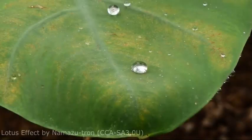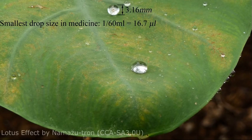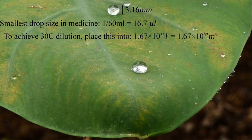What does this mean in practical terms? If we start with the smallest drop size used in medicine today — 60 drops per milliliter — then one drop is 16.7 microlitres. That's a drop of water 3.16 millimetres across. To dilute that to 30C in a single step, we'd put that 3 millimetre drop of water into 1.67 times 10 to the 52 cubic metres of water.